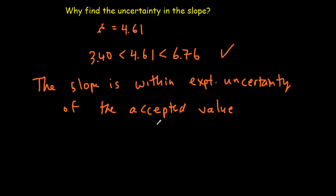Now, if there wasn't a value, an accepted value that we could compare to, it's still important to have uncertainties so that you know how accurate your, or how precise your results are, so that you can tell your reader this information.